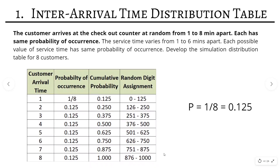Coming to the first step — calculating the inter-arrival time distribution table. It has four columns: customer arrival time, probability of occurrence, cumulative probability, and random digit assignment. Since a customer can arrive from 1 to 8 minutes, we have 8 rows starting from 1. Since each customer has the same probability of occurrence, the probability is 1/8, which equals 0.125. The entire probability column is filled with 0.125.